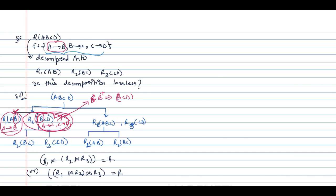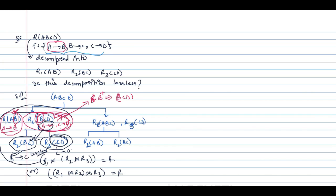Here B is not a key attribute in R1, but it is a key attribute in at least one table. Further, this relation is broken into two parts: B determines C applies to R2(B, C) and C determines D applies to R3(C, D). The common attribute is C, and C is a key attribute in at least one of the tables, so this decomposition is also lossless.